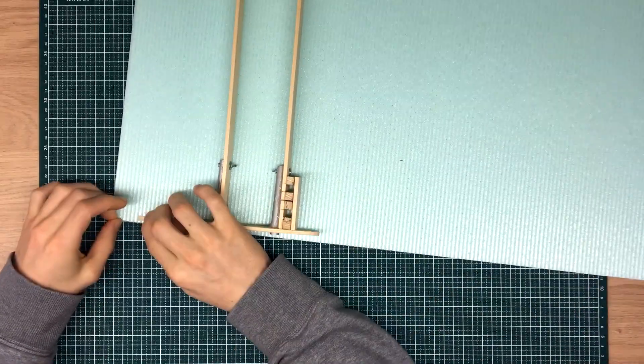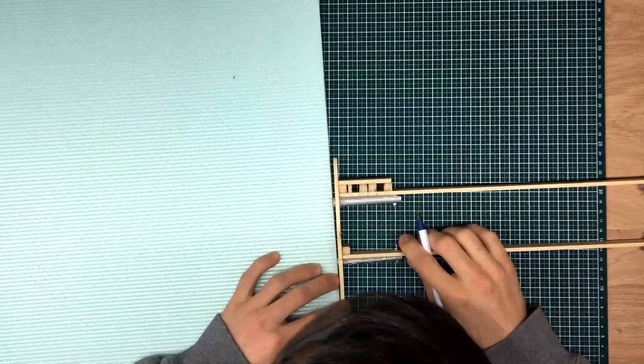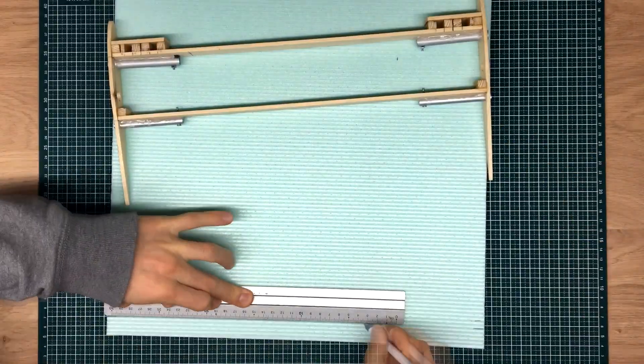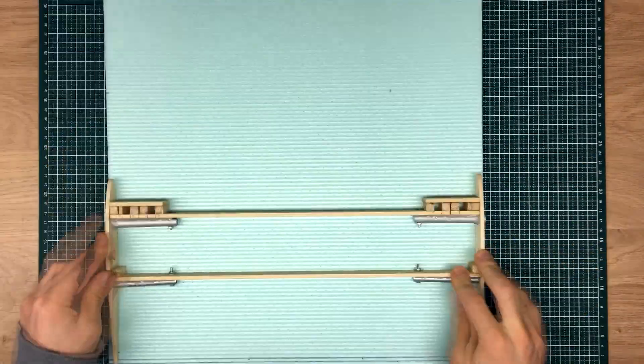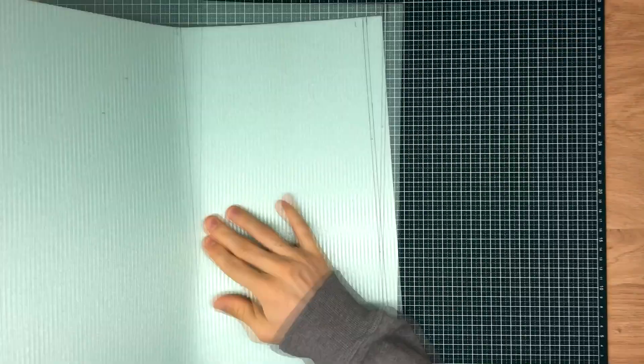I now started to measure out the skin that would cover this section of the wing. I have pre-folded the skin to form a nice curve.